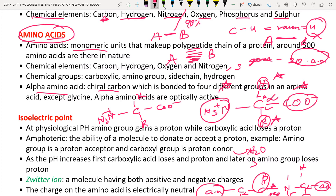In glycine, the R side chain is just hydrogen. So when you count, there are only three different groups — the hydrogen above and below are the same. Because it has two hydrogens, glycine cannot be accepted as an alpha amino acid; it only has three different groups instead of four. Alpha amino acids are also optically active, which we will discuss in coming lectures.